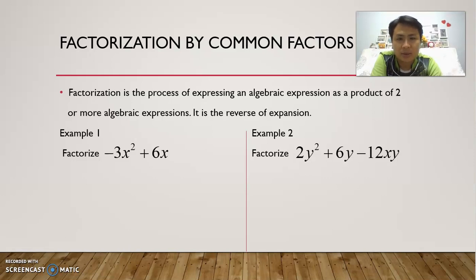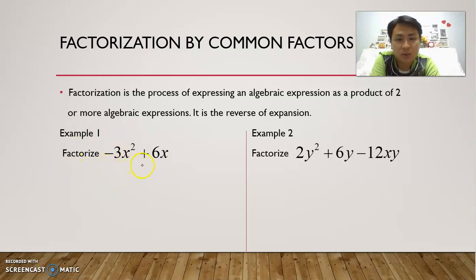Now let's take a look at factorization by common factors. Factorization is a process whereby you express an algebraic expression into two or more factors. It's actually the opposite of expansion. Let's take a look at an example — we have negative 3x squared plus 6x, and we are supposed to factorize it.